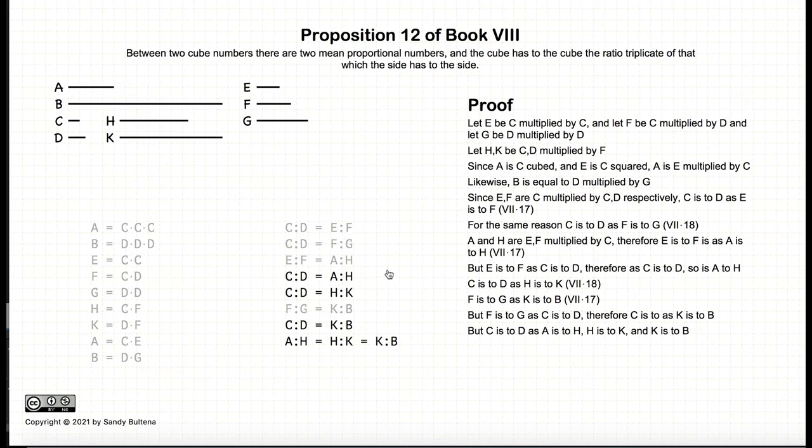And again, putting this together, we have c to d here is equal to these three ratios. So these three ratios must also be equal. So a to h is equal to h to k is equal to k to b. So thus we have found two numbers, h and k, which are the two mean proportional numbers between a and b.